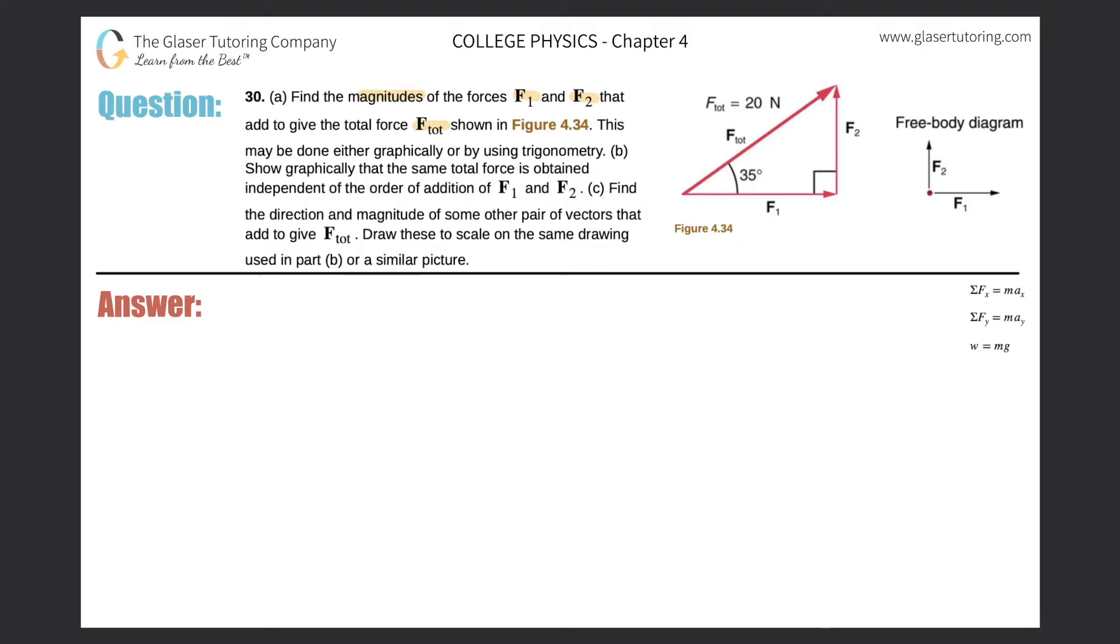This may be done either graphically or by using trigonometry. So here I'm going to use trig. So basically what we need to do, here is our triangle. It's a right triangle, therefore we can use SOHCAHTOA. The hypotenuse of the triangle has a value of 20 newtons. We know this angle, and what we're looking to do is find these two sides.